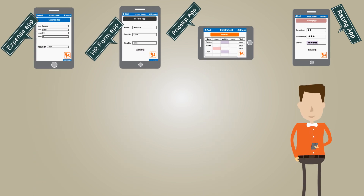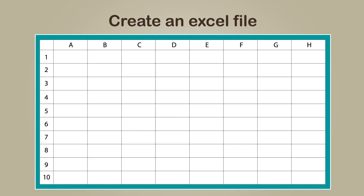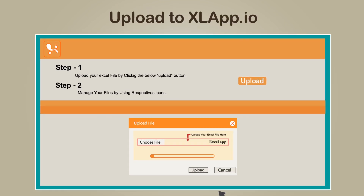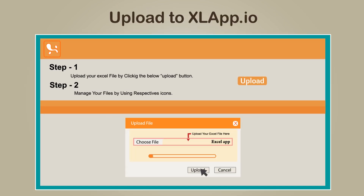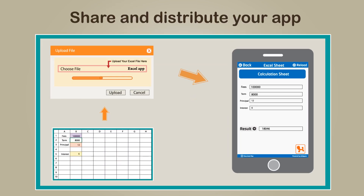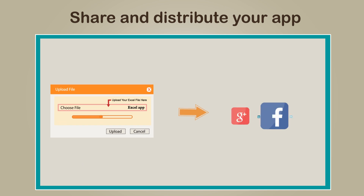Excel App involves three simple steps: 1. Create an Excel file with your logic. 2. Upload it to xlapp.io to get your mobile app. 3. Share and distribute your app right from the xlapp.io site.